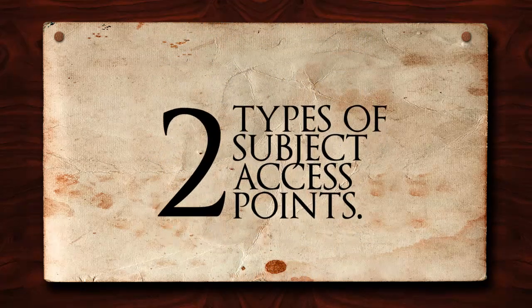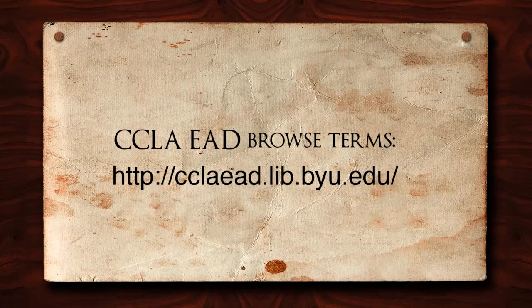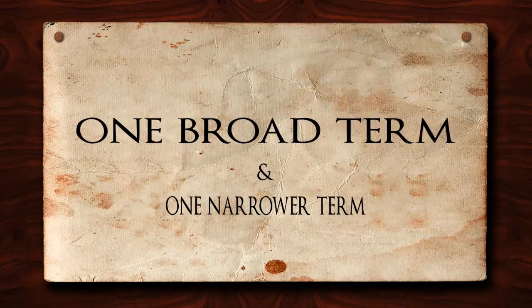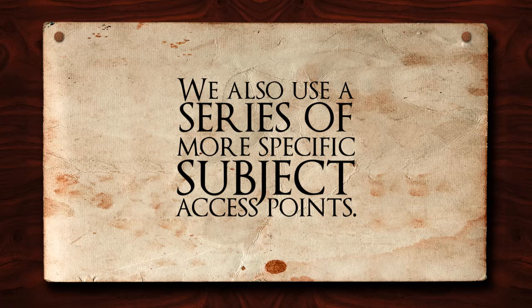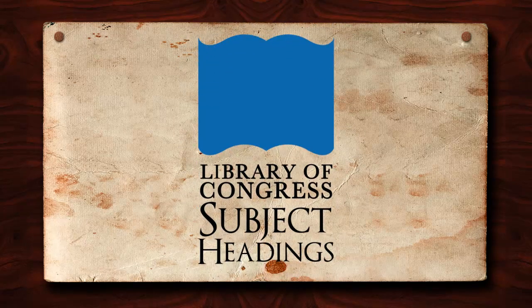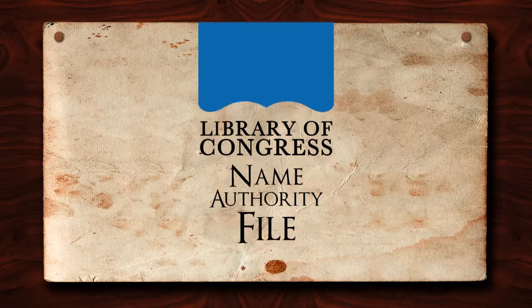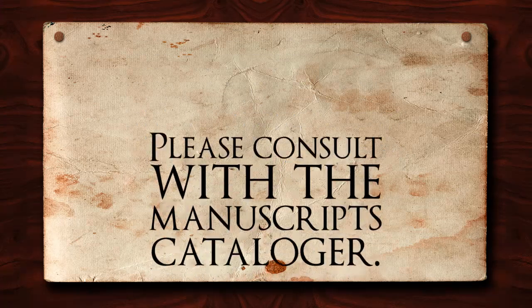As we do our descriptive work, there are two types of subject access points to be looking at and using. The first are the CCLA EAD Browse Terms: broad subject area terms used for browsing in our Finding Aids database. At the top level of a descriptive record, you are required to enter at least one broad term and one narrower term. In addition to the browse terms, we also use more specific subject access points. At the Lee Library, we use the Library of Congress subject headings for all topical entries and the Library of Congress name authority file for any personal or corporate body name entries. These headings can be accessed at the Library of Congress website or in the large printed volumes. If you are unable to locate the correct term, please consult with the Manuscripts cataloger.